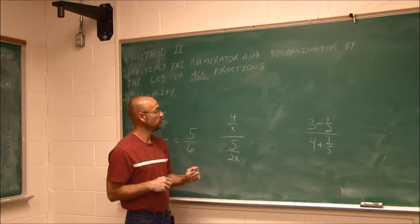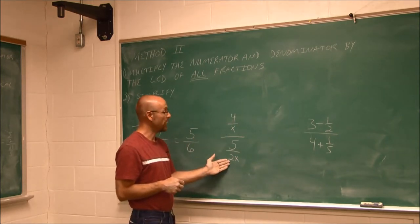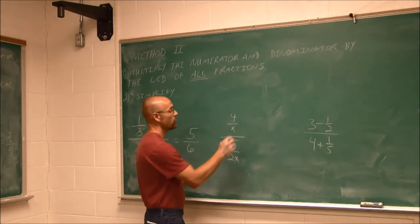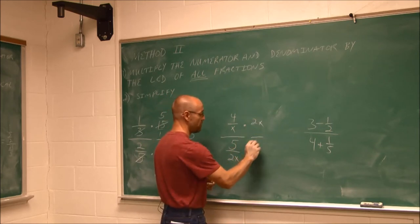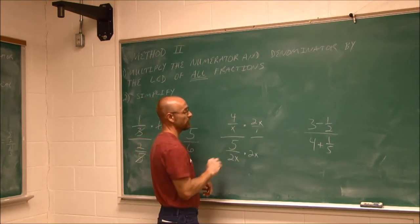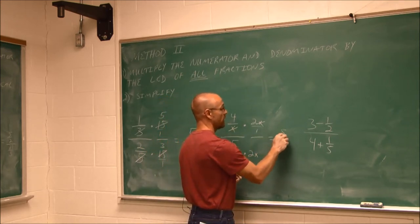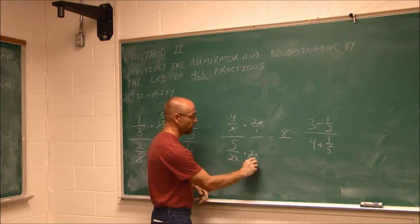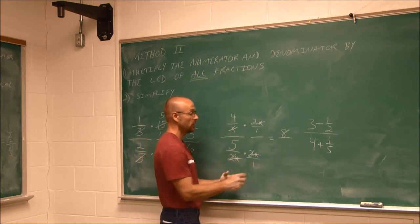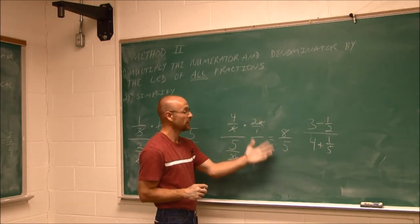For the next example, I identify the LCD of all fractions involved. Here I have x and 2x as denominators, so the LCD must have a factor of 2 and a factor of x — making the LCD 2x. Multiplying top and bottom by 2x: in the numerator, x cancels x, giving 4 times 2 = 8. In the denominator, 2 cancels 2 and x cancels x, leaving 5. So the answer is 8/5. We could write it as the mixed number 1 and 3/5, but that's not required here.